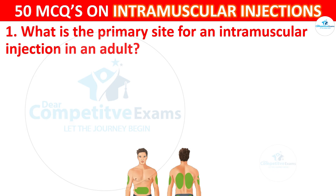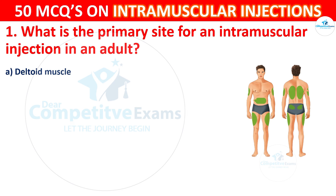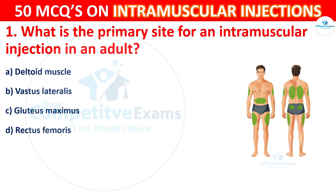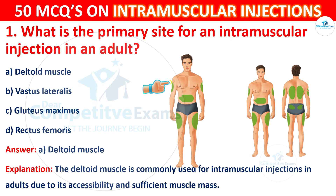What is the primary site for an intramuscular injection in an adult? The options are: Deltoid muscle, Vastus lateralis, Gluteus maximus, or Rectus femoris. The correct answer is A, Deltoid muscle. The deltoid muscle is commonly used for intramuscular injections in adults due to its accessibility and sufficient muscle mass.